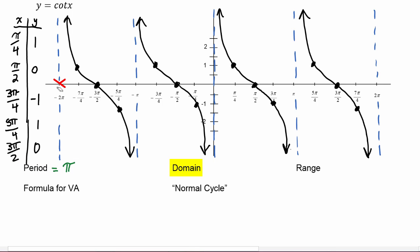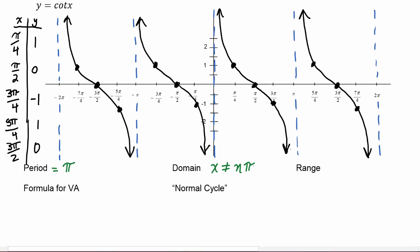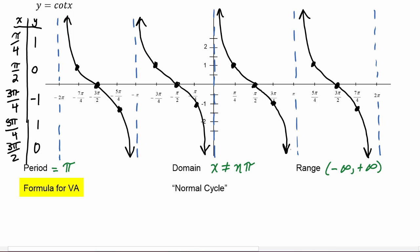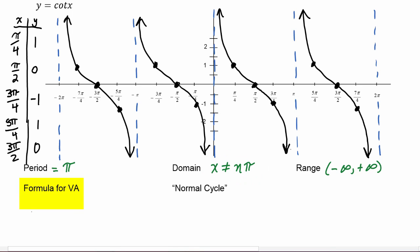For the domain, there are values we cannot plug in — everywhere there's an asymptote we cannot use those values. The asymptotes are at negative two pi, negative pi, zero, pi, and two pi, so the domain is that x cannot equal those integer multiples of pi. Like tangent, the y values go forever in the positive and negative directions, so the range is all real numbers, negative infinity to positive infinity. The formula for the vertical asymptotes is x equals n pi.